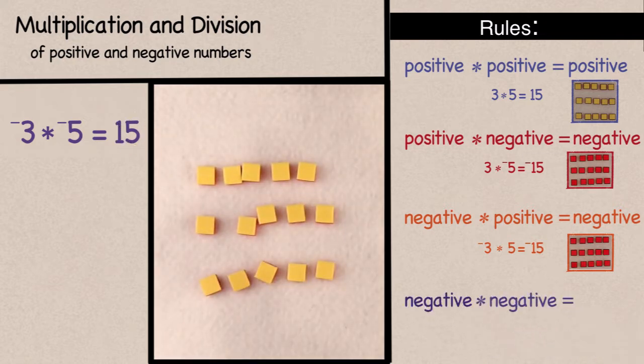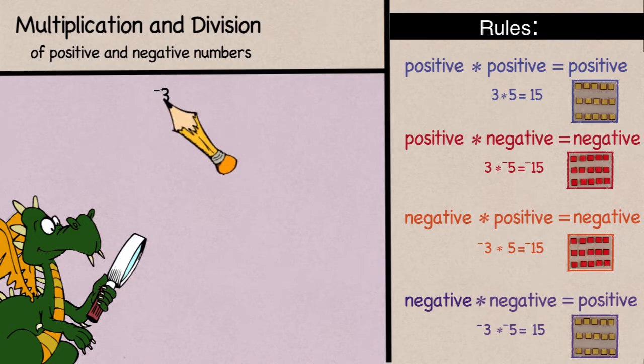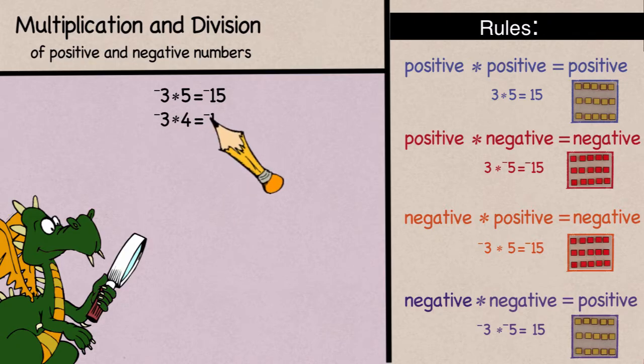and the opposite of that is positive 15. Okay, so a negative times a negative gives me a positive answer. That seems a little less obvious to me. So let's see if we can look at the problem a different way. We have already shown that negative 3 times 5 is negative 15, and since a negative times positive is a negative, that means negative 3 times 4 is negative 12, and negative 3 times 3 is negative 9. I'm starting to see a pattern here. So let's continue this.